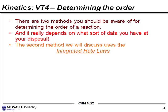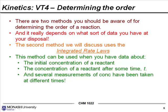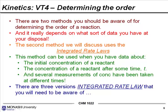The second method uses integrated rate laws when you have a different kind of data set. This method can be used when you have data about the initial concentration of a reactant, the concentration of a reactant after some time t, and several measurements of the concentration have been taken at different times. In this case we'll use the integrated rate law, and there are three versions you should be aware of.